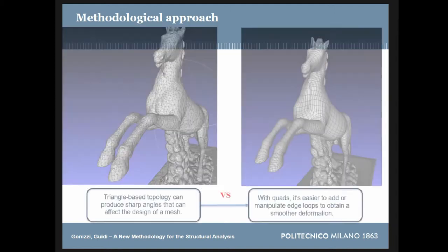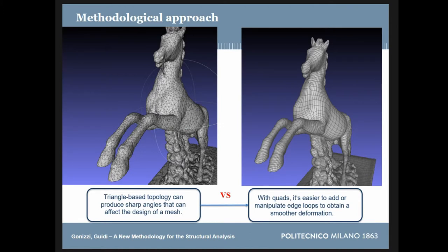Here you can see the differences on a statue at the Uffizi. The simplification level is more or less the same — about 32,000 vertices. The problem with the triangular mesh is that sometimes you have sharp angles, so self-intersecting and non-manifold elements can be excessive. With quad-based retopology it's much more elegant — geometrically simpler.